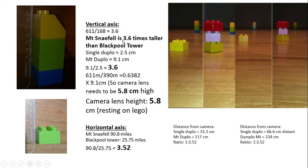It works out that Mount Snaefell is 3.6 times taller than Blackpool Tower. So this set of Duplo is 9.1 centimeters and this is 2.5 centimeters. So this is 3.6 times taller than this one.